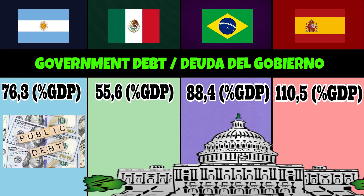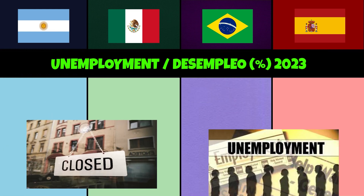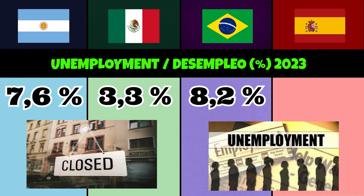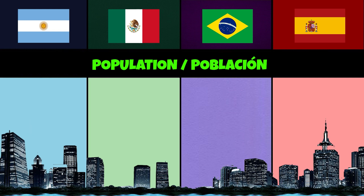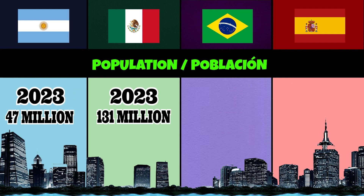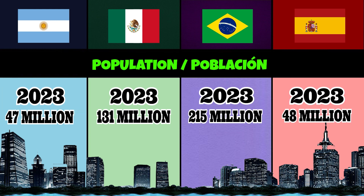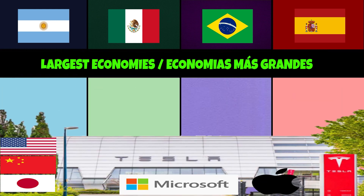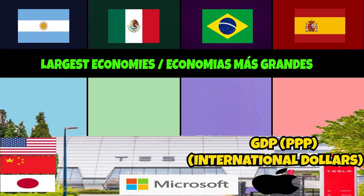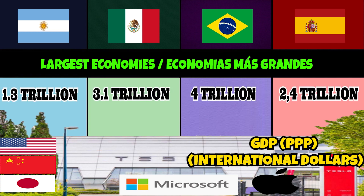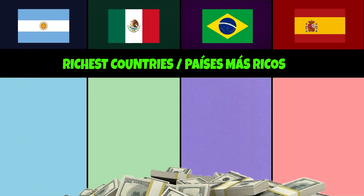Unemployment rate: 7.6%, 3.3%, 8.2%, 12.6%. Population: 47 million, 131 million, 215 million, 48 million. Largest economies GDP purchasing power parity: 1.3 trillion dollars, 3.1 trillion dollars, 4 trillion dollars, 2.4 trillion dollars.